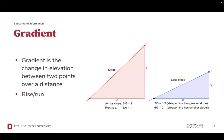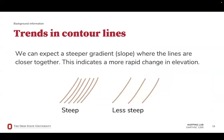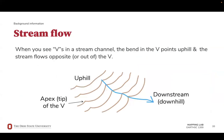Gradient is the change in elevation between two points over a distance. This is calculated as the rise, or the change in elevation, divided by the run, or the distance between two points. We can expect to see a steeper gradient or slope where the lines are closer together, indicating a more rapid change in elevation — something you would expect to see around a hill or a mountain. When you see V-shaped bends in a stream channel, the bend in the V points uphill and the stream flows opposite, or out of, the V shape.